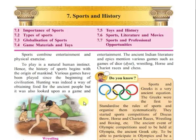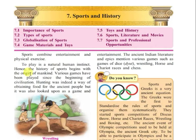Let us now begin with the 7th chapter, that is Sports and History. In this particular chapter we shall be discussing some points. The points are as follows: 7.1 Importance of Sports, and 7.2 Types of Sports.